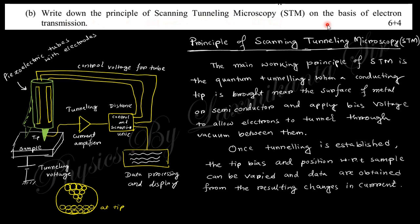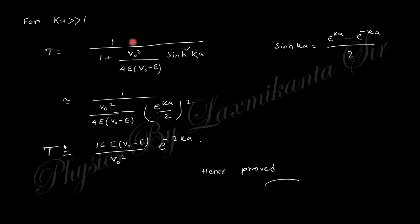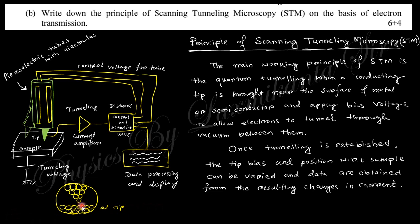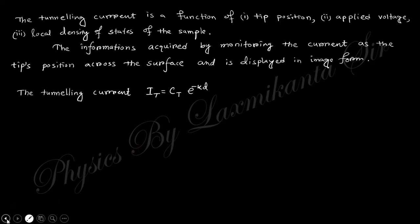Question 10 says: write down the principle of the scanning tunneling microscope (STM). The STM uses the tunneling effect — electrons tunnel from the tip and scan the sample. The working principle is quantum tunneling: when a conducting tip is brought near the surface of a metal or semiconducting sample and a bias voltage is applied, electrons tunnel across the air gap because of the potential difference. The gap distance affects the tunneling current, which is converted into image form.